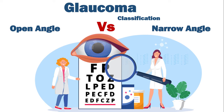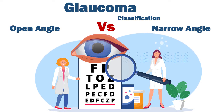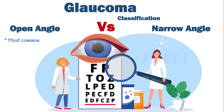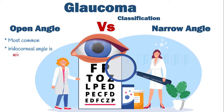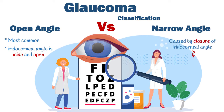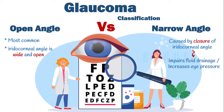Glaucoma is mainly classified into open-angle and narrow-angle. As their names suggest, the difference is attributable to the iridocorneal angle. Open-angle glaucoma is the most common type, in which the iridocorneal angle is wide and open, while narrow-angle glaucoma is caused by closure of the iridocorneal angle, impairing fluid drainage and raising eye pressure.